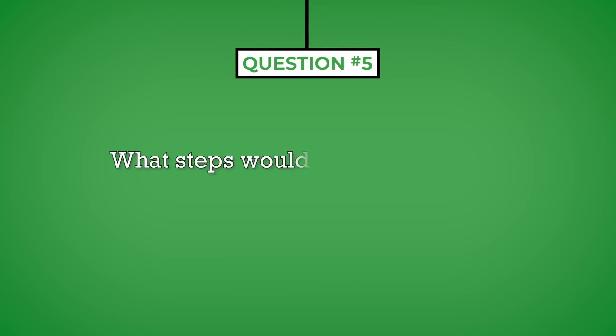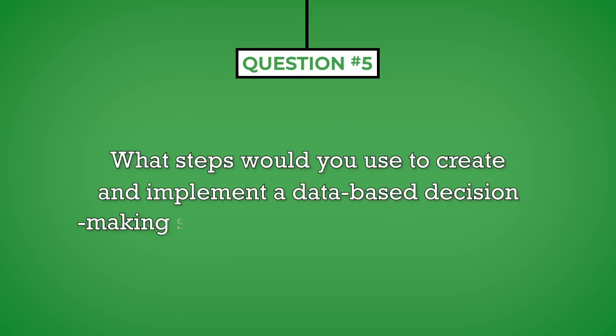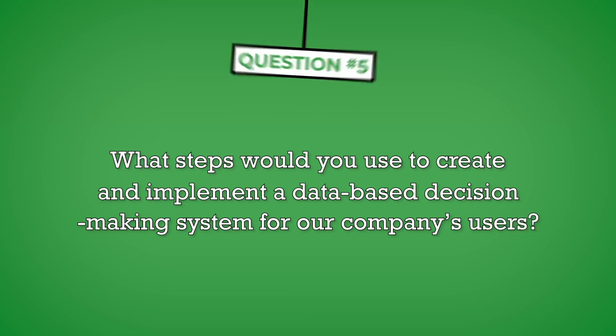Question number five: What steps would you use to create and implement a database decision-making system for our company's users? This is an operational question that the interviewer uses to better understand how you perform your job. The best way to respond is to break down the processes you use into individual steps and briefly describe them in the order in which you execute them. Your answer should be brief and to the point, and you should also anticipate follow-up questions.